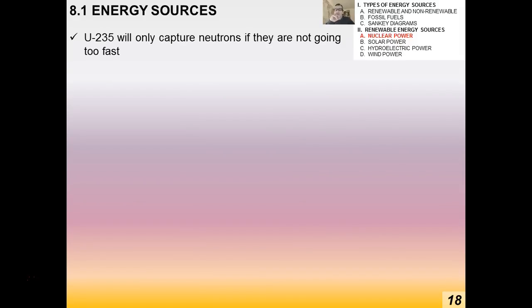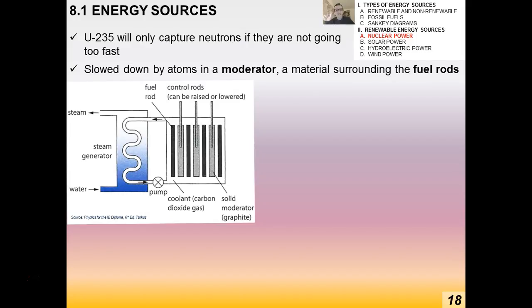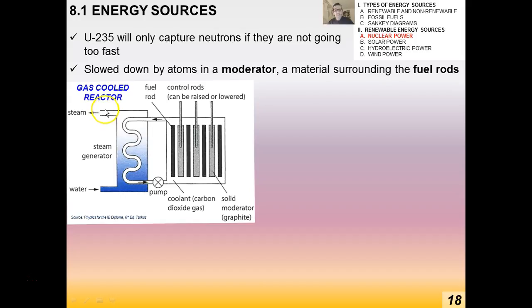The uranium-235 nucleus will only capture neutrons if they're not going too fast — they have to be the right speed, and are slowed down by what's called a moderator. In a nuclear power plant, the moderator surrounds the fuel rods, where the uranium-235 is located. This example shows a gas-cooled reactor with steam generators, pumps, fuel rods, and control rods.